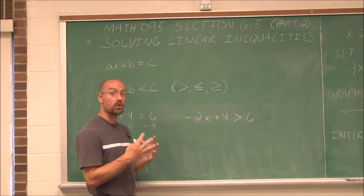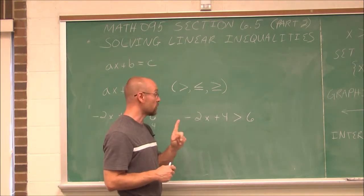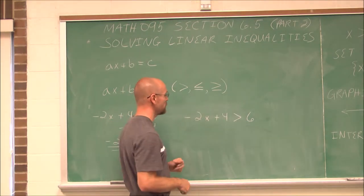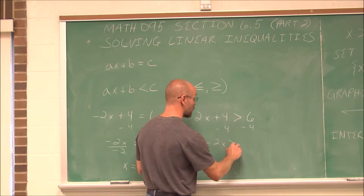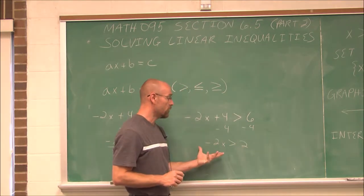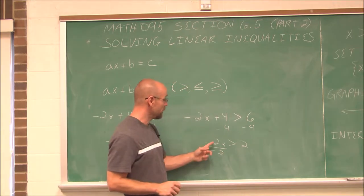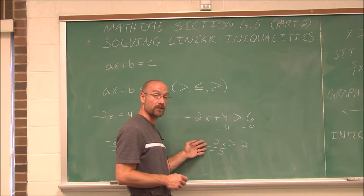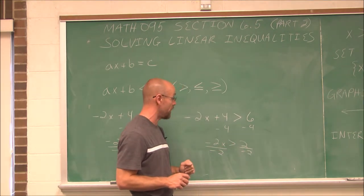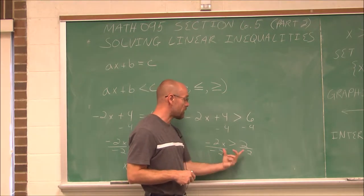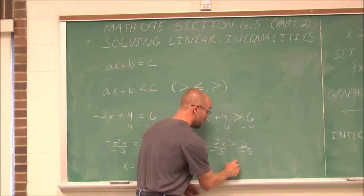When it comes to an inequality, we treat it the same way. We're going to use our properties of equality — what we do to one side, we do to the other. There's only going to be one difference, and it's something we have to pay close attention to. If we divide by a negative, it's going to change the sign, and what we do to one side, we have to do to the other. If we divide by a negative — or even multiply by a negative, which would also change the sign — we have to always change the inequality sign.